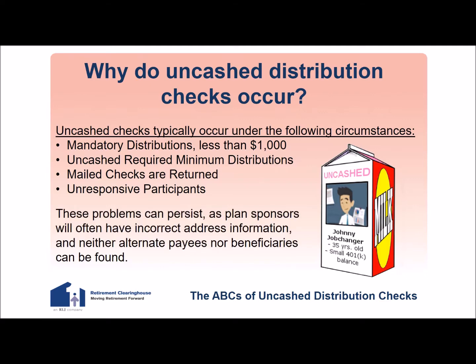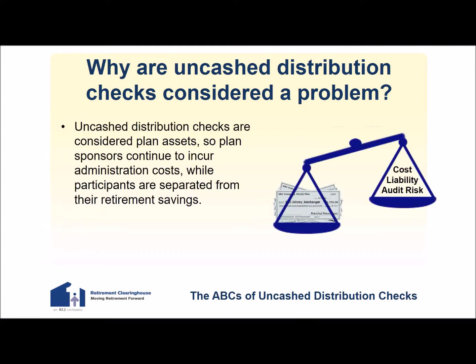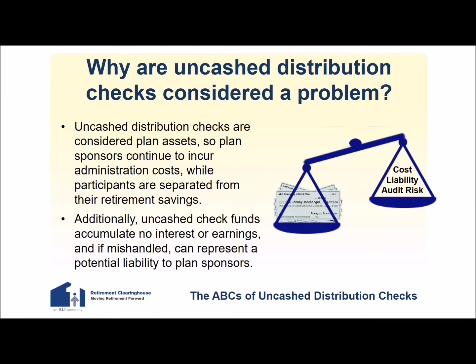These problems can persist as plan sponsors will often have incorrect address information and neither alternate payees nor beneficiaries can be found. Uncashed distribution checks are considered plan assets, so plan sponsors continue to incur administration costs while participants are separated from their retirement savings. Additionally, uncashed check funds accumulate no interest or earnings and, if mishandled, can represent a potential liability to plan sponsors.